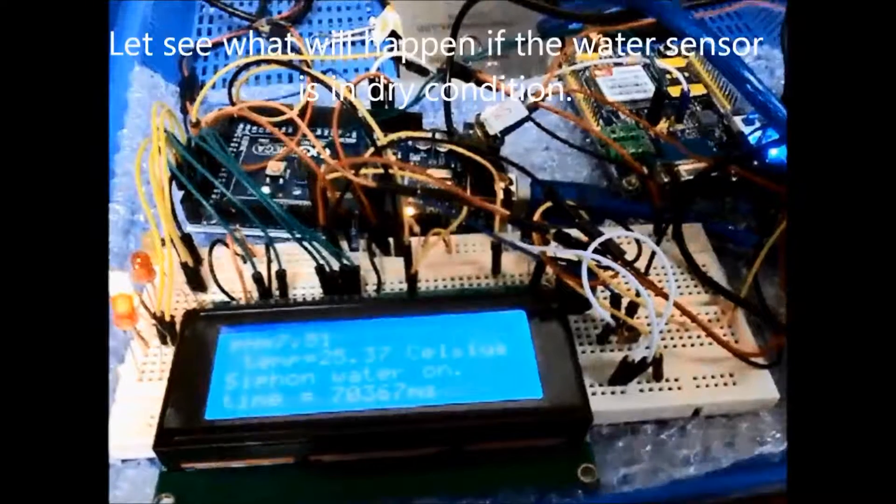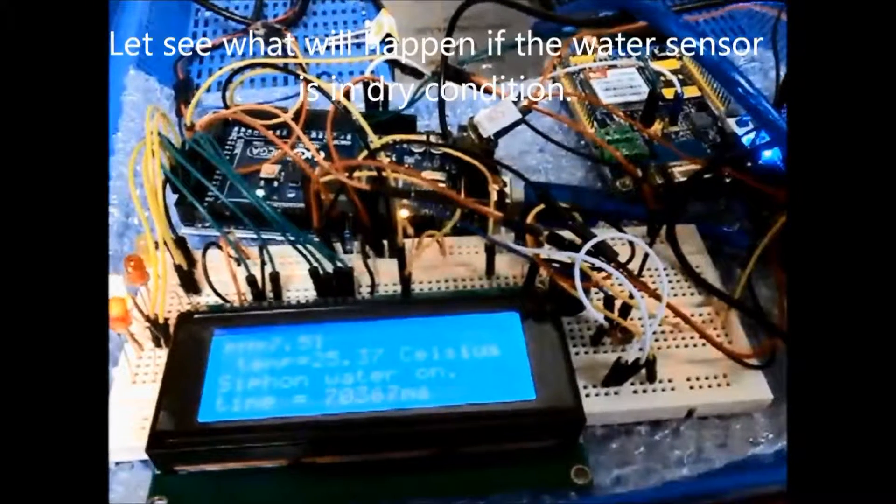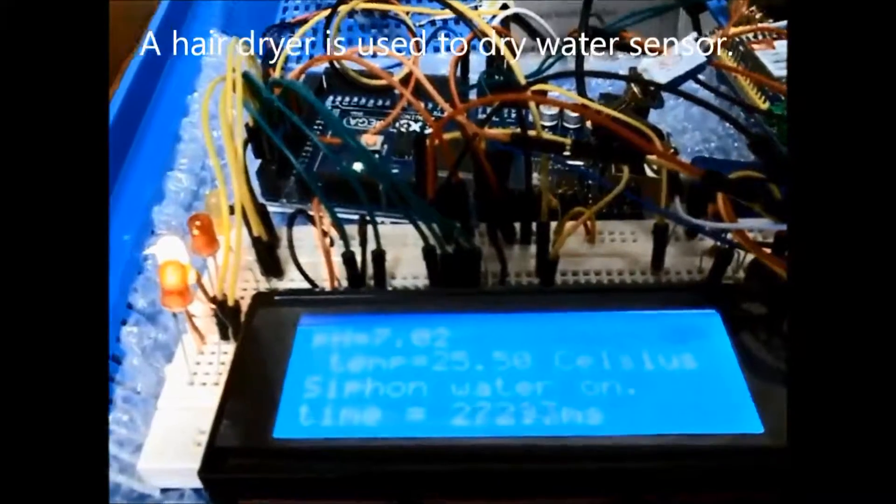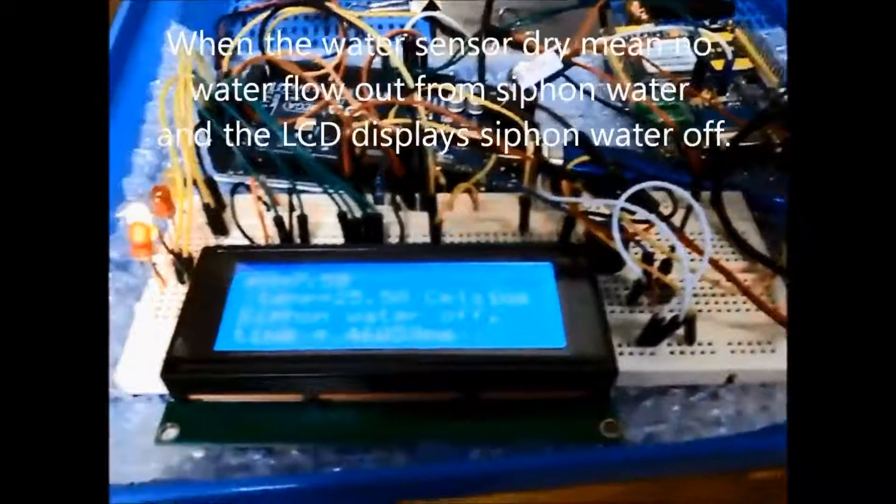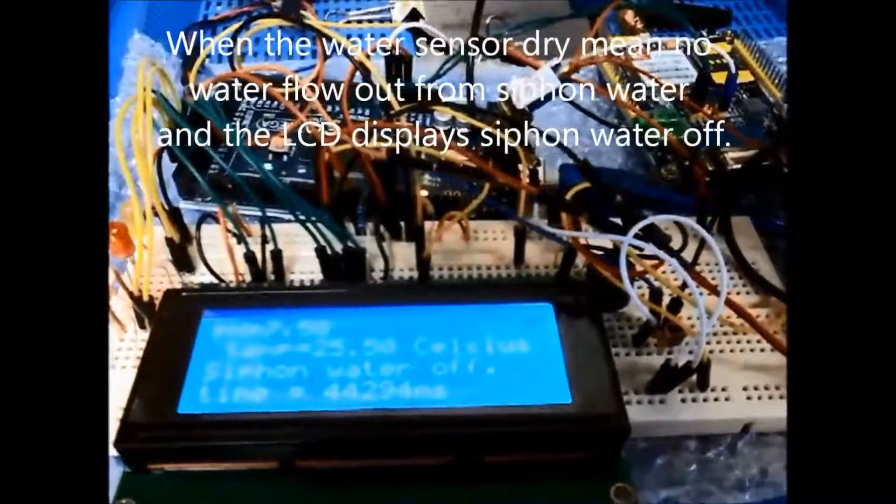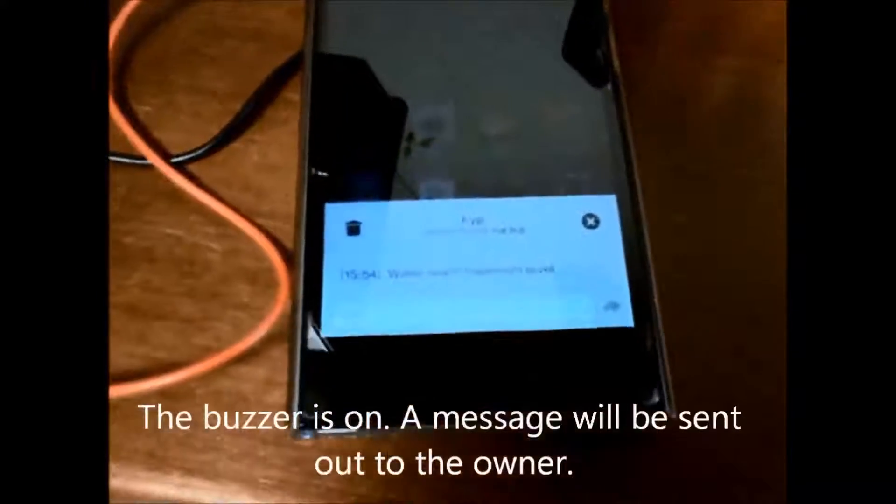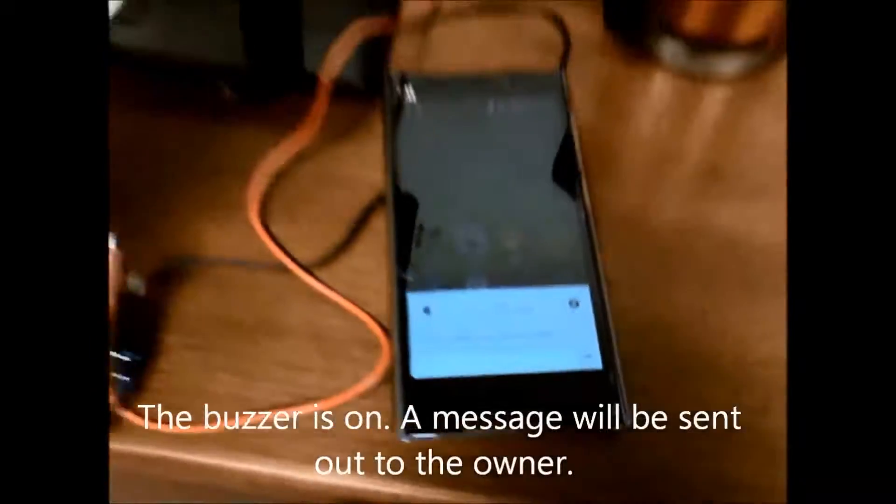Let's see what will happen if the water sensor is in dry condition. A hair dryer is used to dry the water sensor. When the water sensor is dry, meaning no water flows out from the siphon water, the LCD displays siphon water off. The buzzer turns on and a message will be sent out to the owner.